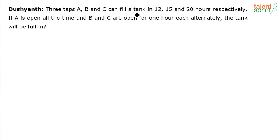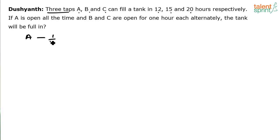Three taps A, B, and C can fill a tank in 12, 15, and 20 hours respectively. So A's capacity is 1/12, B's capacity is 1/15, and C's capacity is 1/20. The capacities of all three taps have been given to us.